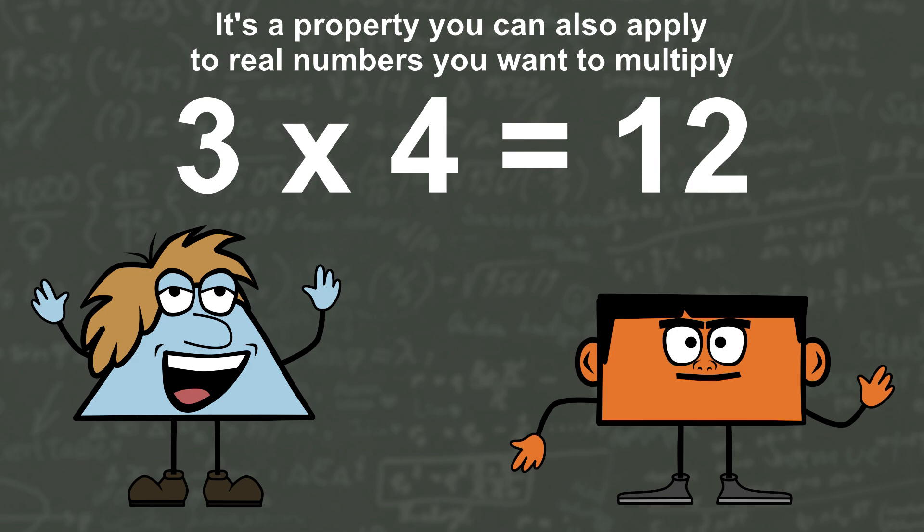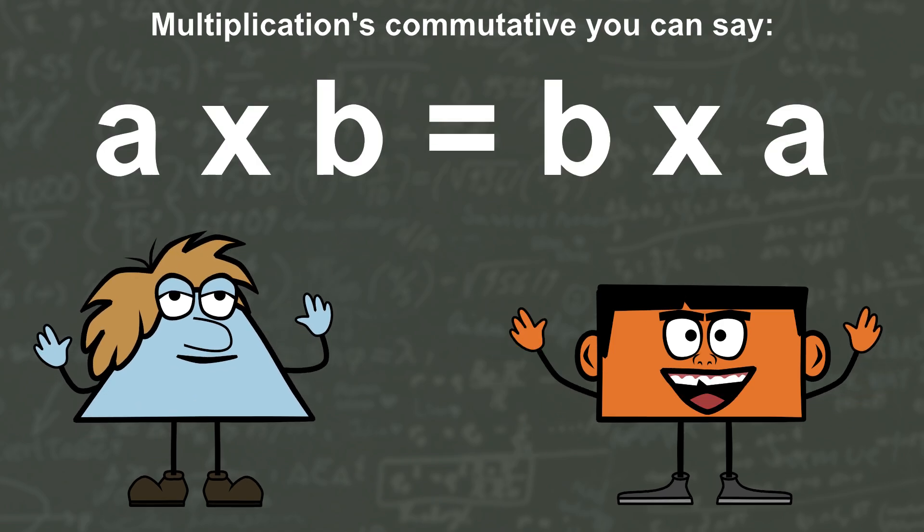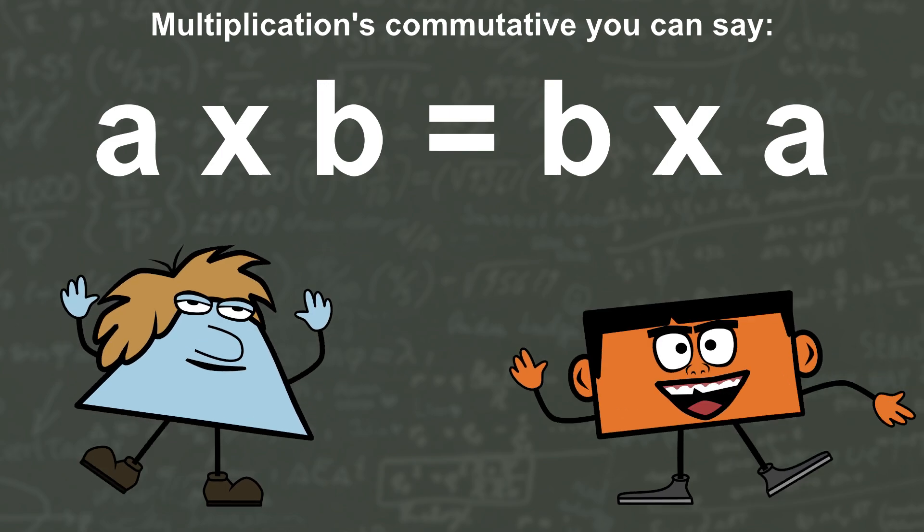That's a property you can also apply to real numbers you want to multiply. Multiplication's commutative, you can say a times b equals b times a.